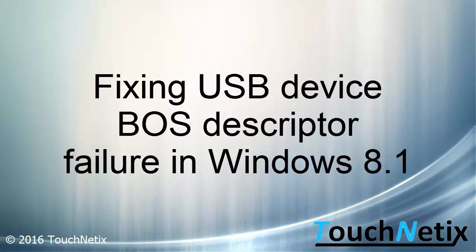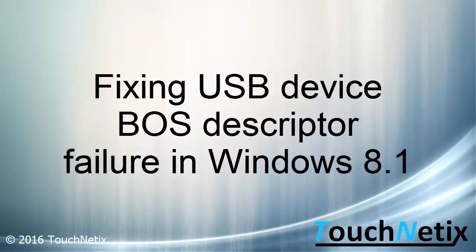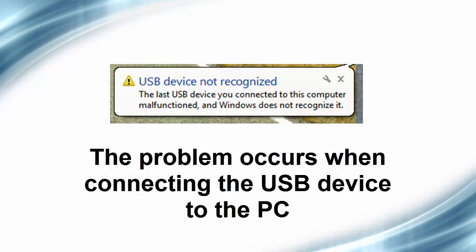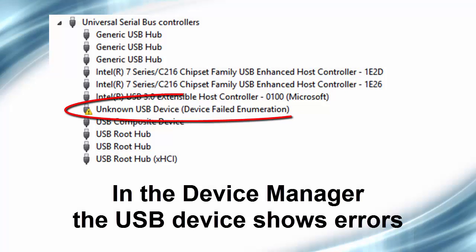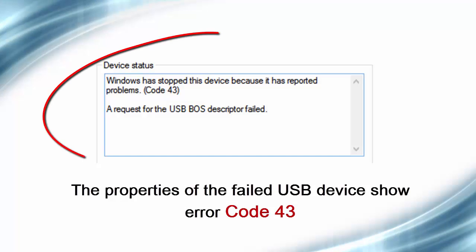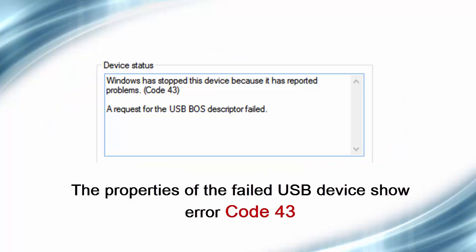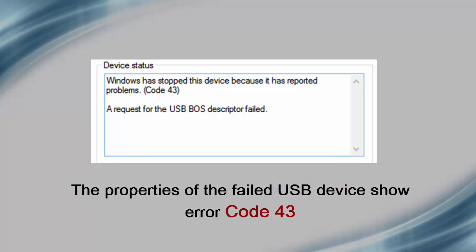Hello! In this video I will show you how to fix a problem caused by the BOS descriptor enumeration failure in Windows 8.1. The problem occurs when you connect the device and you see that the device is not recognized, and in the Device Manager you see unknown USB device. Also in the properties of the device you see code 43.